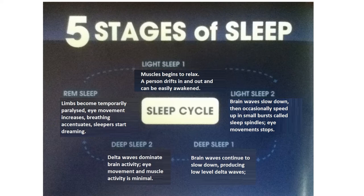These four stages are called non-rapid eye movement stages, and then comes REM sleep, or rapid eye movement sleep. Limbs become temporarily paralyzed, eye movement increases, breathing accentuates, and sleepers start dreaming.